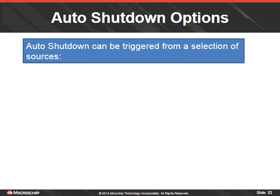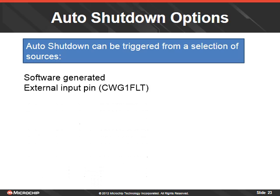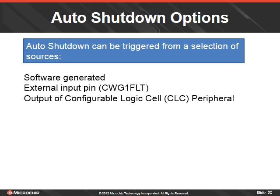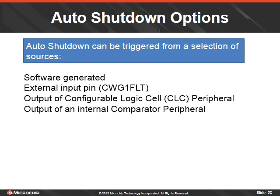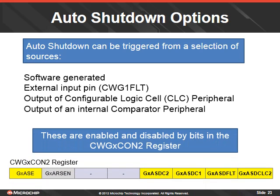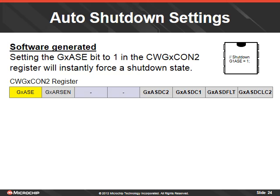Auto shutdown can be triggered from a selection of sources: software generated, external input pin, output of a configurable logic cell, or output of an internal comparator. These are enabled and disabled by bits in the CWG control 2 register. To enable the software generated shutdown, the auto shutdown event bit is set to 1 in the CWG control 2 register. This will instantly force a shutdown state.